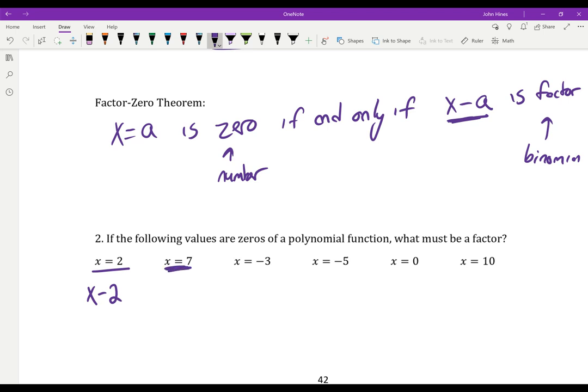If I have a 0 at 7, what factor did that come from? That came from x minus 7. If I have a 0 at negative 3, what factor did that come from? Well, that came from x plus 3. If I have a 0 at negative 5, that came from x plus 5. If I have a 0 at 0, you got choices here. You could say x minus 0, you could say x plus 0. Right? Isn't that the same thing? Or you could just say x. x is one of my factors.